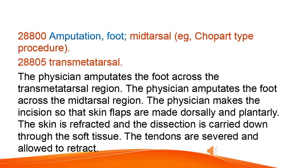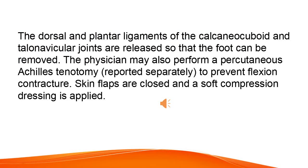The physician amputates the foot across the transmetatarsal region. An incision is made so that skin flaps are created dorsally and plantarly. The skin is retracted and the dissection is carried down through the soft tissue. The tendons are severed and allowed to retract. The dorsal and plantar ligaments of the calcaneocuboid and talonavicular joints are released so that the foot can be removed. The physician may also perform a percutaneous Achilles tenotomy, reported separately, to prevent flexion contracture. Skin flaps are closed and a soft compression dressing is applied.